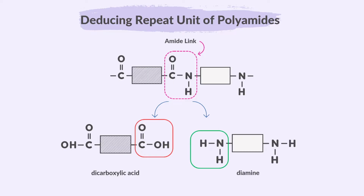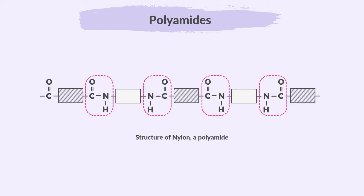Remember, in condensation polymers the repeat units come from two different monomers, each contributing a part of the polymer chain. The result is a long chain polymer with strong bonds. This is the structure of nylon, a type of polyamide formed through the condensation polymerization of a dicarboxylic acid and a diamine.